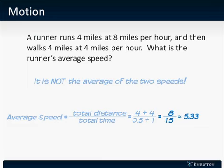So the average speed is 8 total miles over 1.5 total hours, or 5.33 approximately, miles per hour.